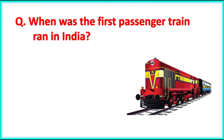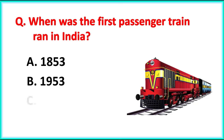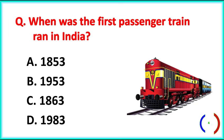When was the first passenger train run in India? The correct answer is option A: in the year 1853.